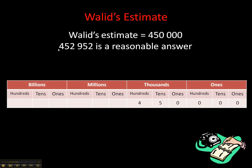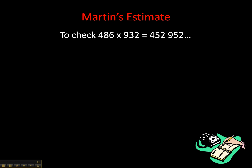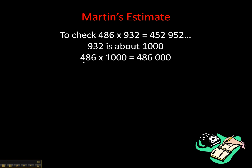Martin takes a different approach. He finds that 932 is about 1000 and rounds up. He multiplies 486 by 1000, which is easy — 486 times 1 is 486, then you add three zeros to the end, giving 486,000. That seems reasonable; it's a bit more than 452,952, but close enough to confirm that the estimate is pretty close.